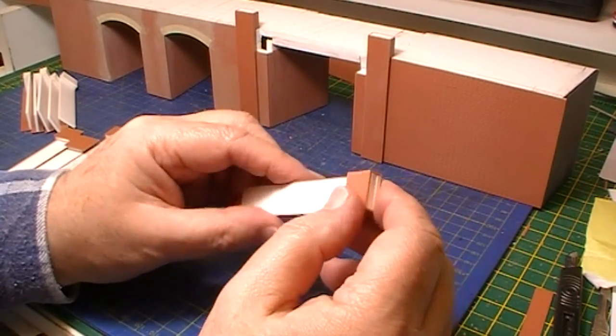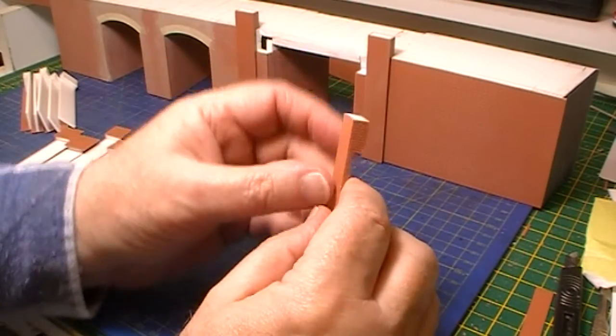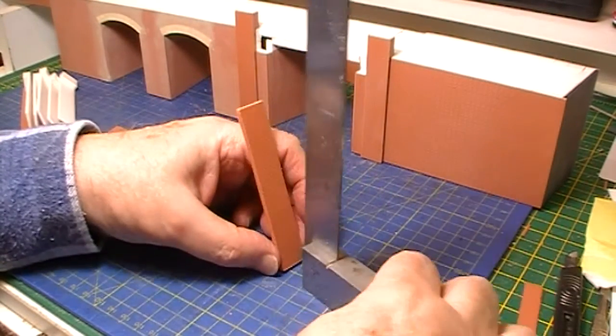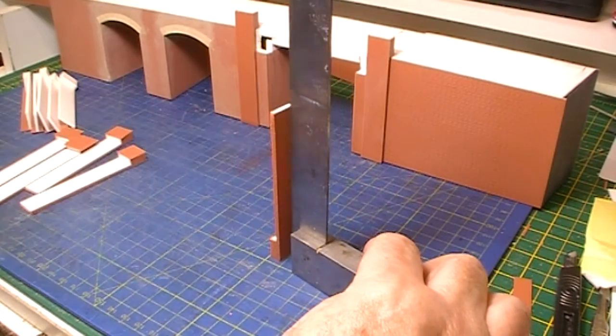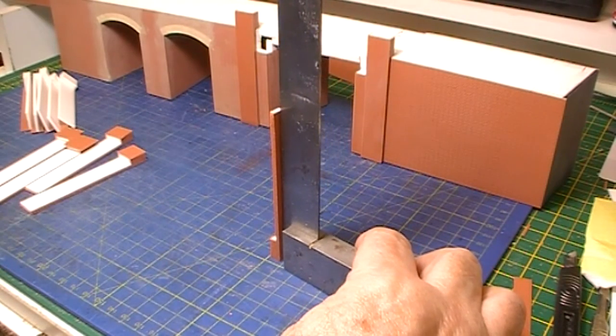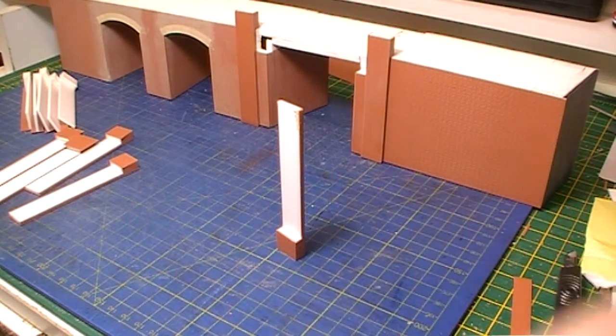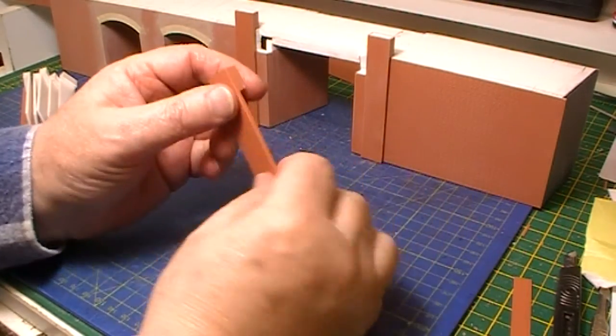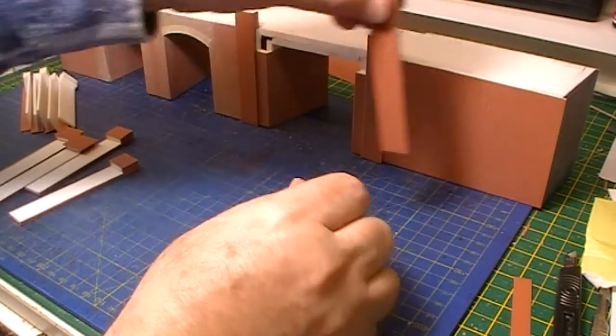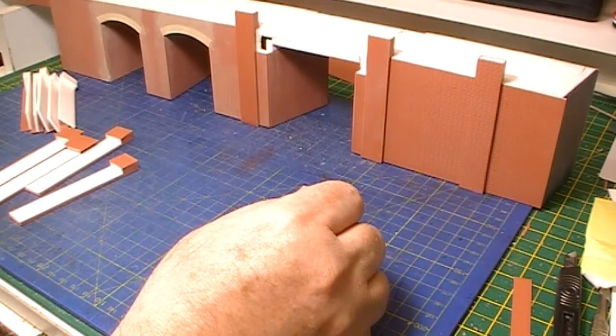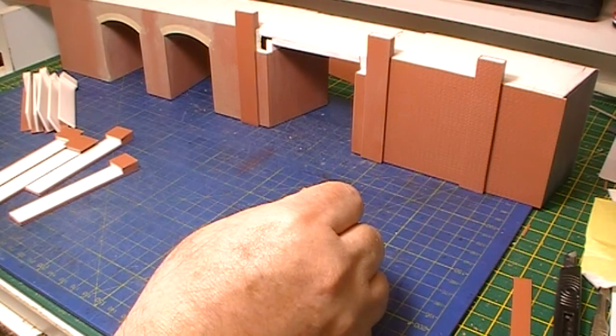The thing to ensure is that you get the tops as square as you can so that when you fit the capping stones, those capping stones will look right sat on the top, and then finally we can fit them onto the finished viaduct.